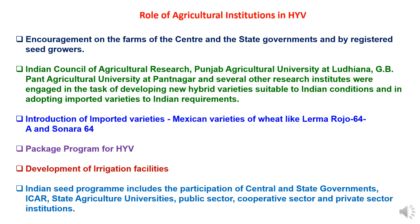Introduction of high yielding varieties of wheat depends crucially on the availability of fertilizers, adequate water supply, pesticides, and insecticides. Therefore, they have to be launched as a package program to get high productivity and increase food grain production. Because of their dependence on irrigation, they could be adopted only in areas having proper irrigation facilities. The Indian seed program includes participation of central and state governments, the Indian Council of Agriculture Research, state agriculture universities, and public, cooperative, and private sector institutions for further development of high yielding varieties to increase production and assure food security.